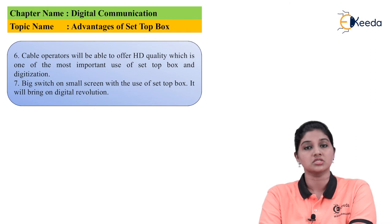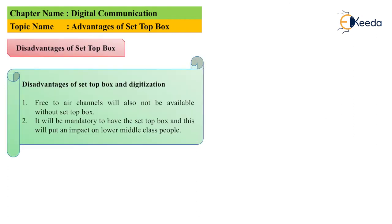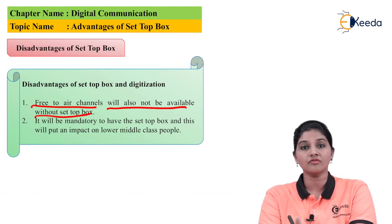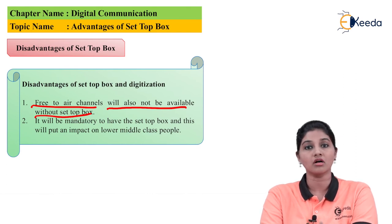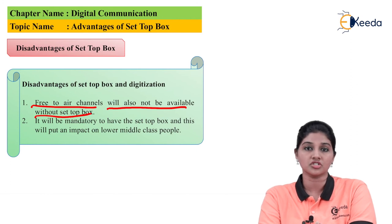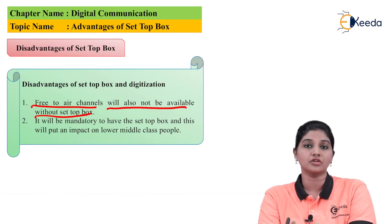Apart from these advantages, there are a few disadvantages of set-top box. The first disadvantage is that free-to-air channels will also not be available without a set-top box. As the signal transmission is in digital form, even if a channel is free, the signal is still digital. So in order to convert that digital signal into analog signal, it is necessary to have a converter, which is the set-top box. If you don't have a set-top box, it is not possible to display even free-to-air channels — they are only available after using a set-top box.